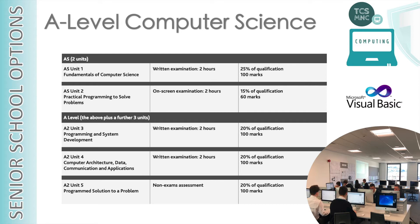Then we've got the A Level, which is made up of 3 units. We've got Unit 3, Programming and System Development — again a 2 hour exam. This is Mr Thomas' unit. You will investigate programs, data structures, algorithms, logic, and programming methodologies in this unit. It's 20% of the overall qualification.